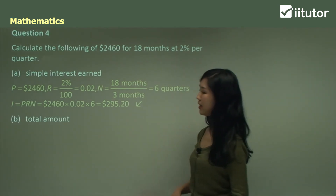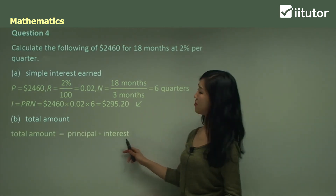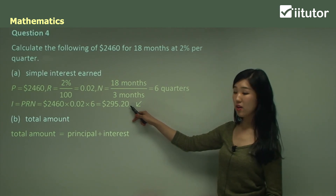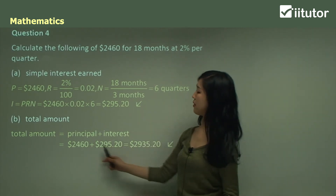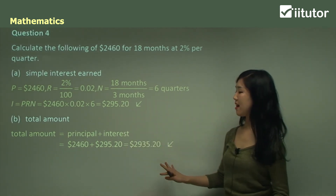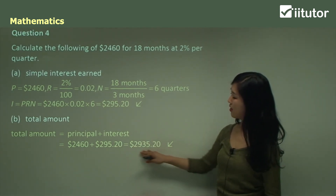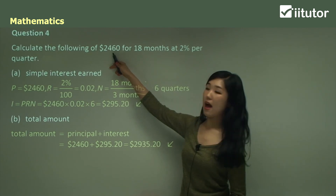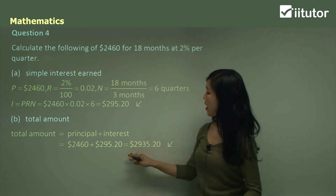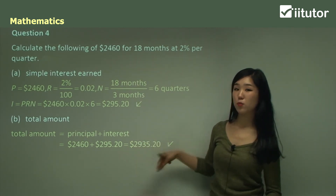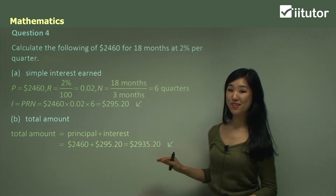For part B, the total amount is principal plus the interest from part A. Add $2,460 plus the interest calculated — that's your total amount. Notice it's a little more than the principal value, because interest has been charged on top. That's what simple interest is all about.